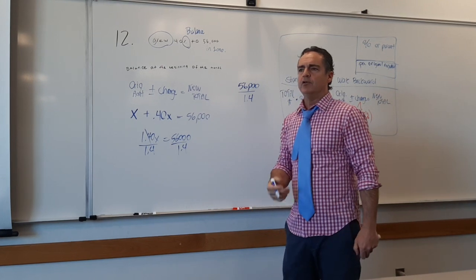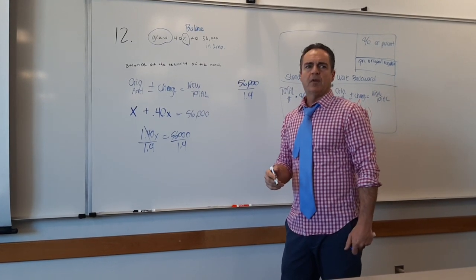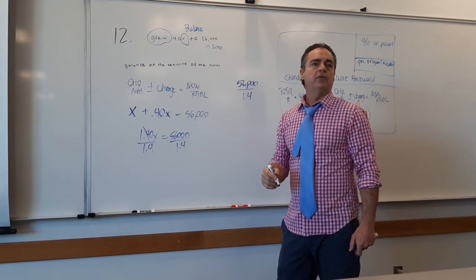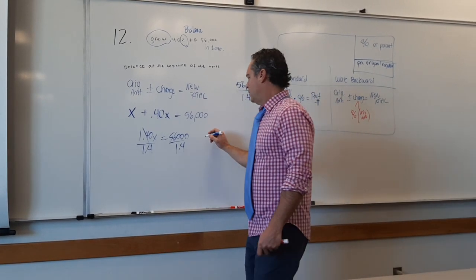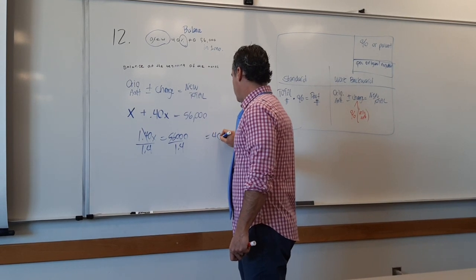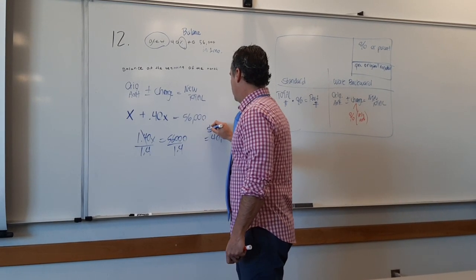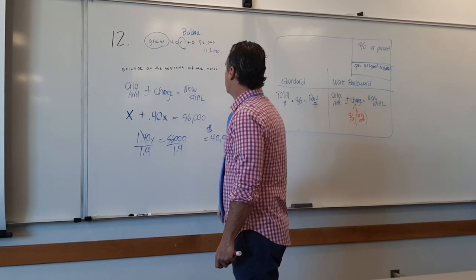Go ahead, do it quickly. 40,000? So this equals $40,000.